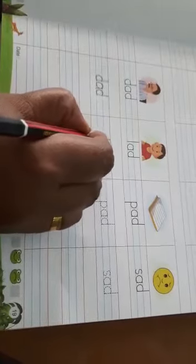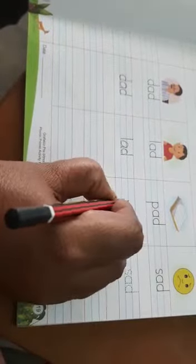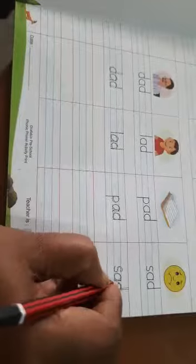Lad, lad means kid. Okay, trace on the dots, write down two times. Pad, trace on the dots, write two times, down. Sad, sad smiley face, trace on the dots, write two times.